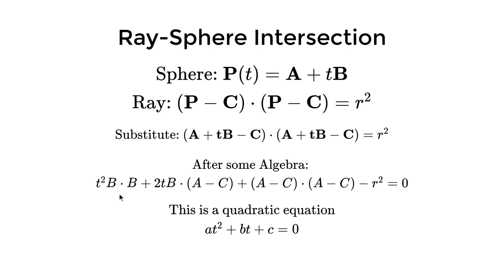In this case B is the direction of the ray. The 2tB·(A - C) term is the B term in the quadratic equation. And (A - C)·(A - C) - r² is the C part of the quadratic equation.